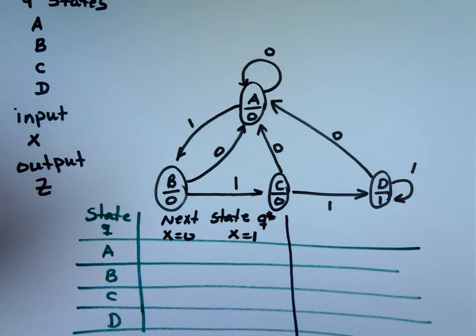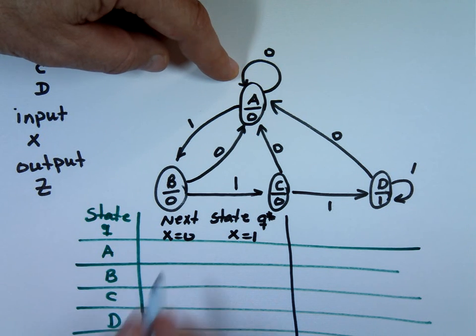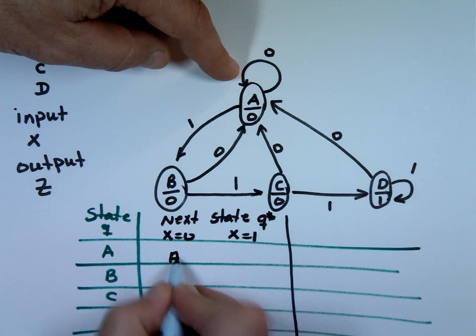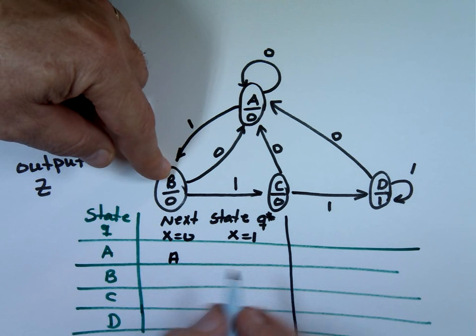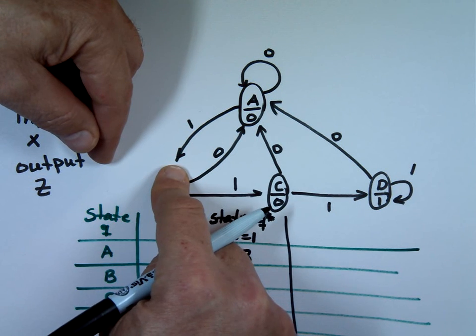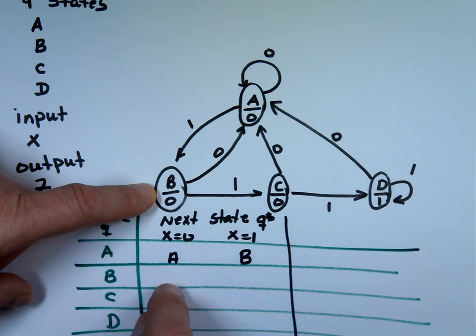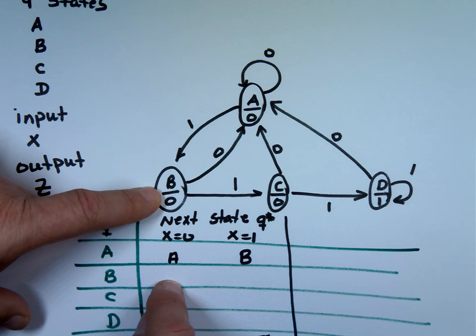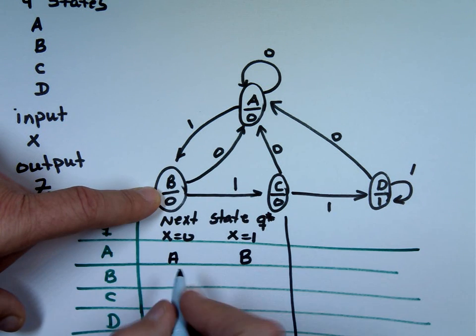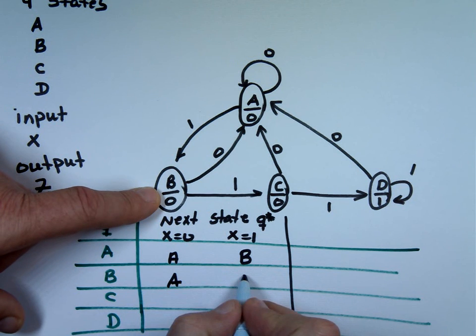So let's look at it. If you're state A and your input is 0, if X is 0, what happens? Where do you go? Returns back to A. You stay at A. But if it's 1, where do you go to? B, right? If you're state B and your input is 0, if X is 0, what happens? Where do you go? You go to A. And if it's 1, where do you go to? C.